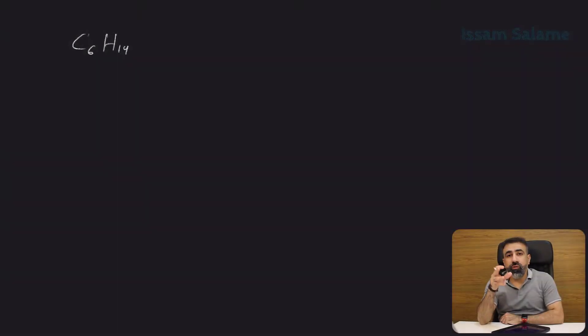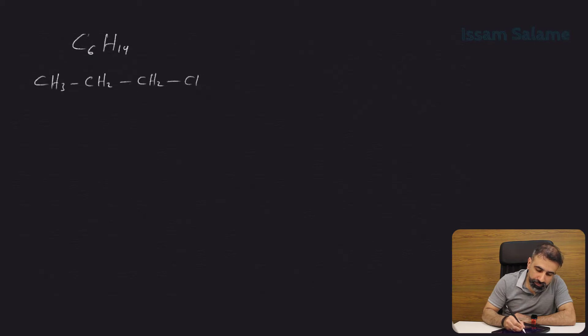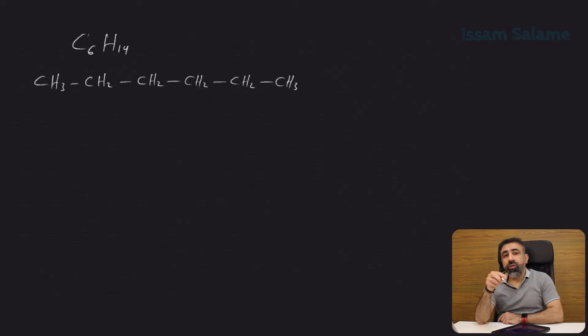The first isomer for C6H14: we can draw six carbon atoms in a chain like this. The name of this structure is going to be hexane because we have six carbon atoms joined by single covalent bonds.